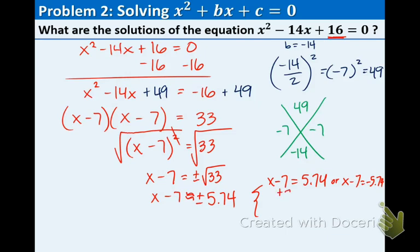One more step and then we're at our answer. Add 7 to both sides. x equals 12.74. And then add 7 to both sides over here. And you get x equals 1.26. So you find out those two numbers work for the given quadratic.